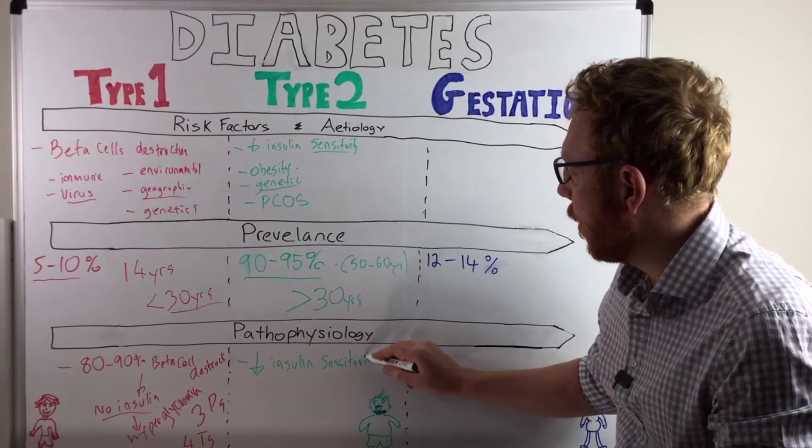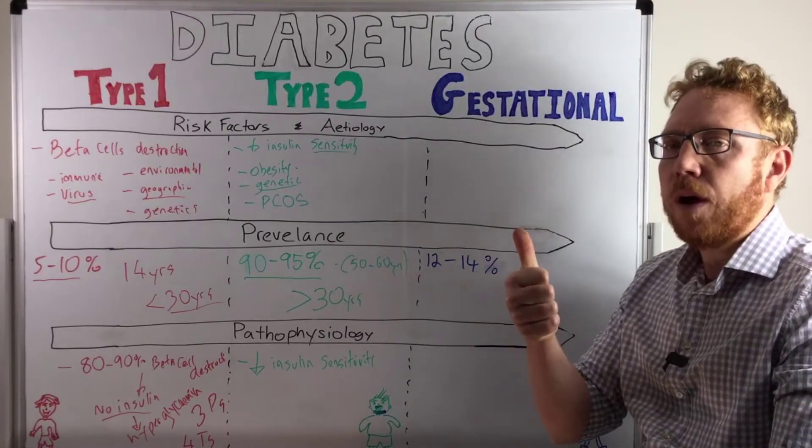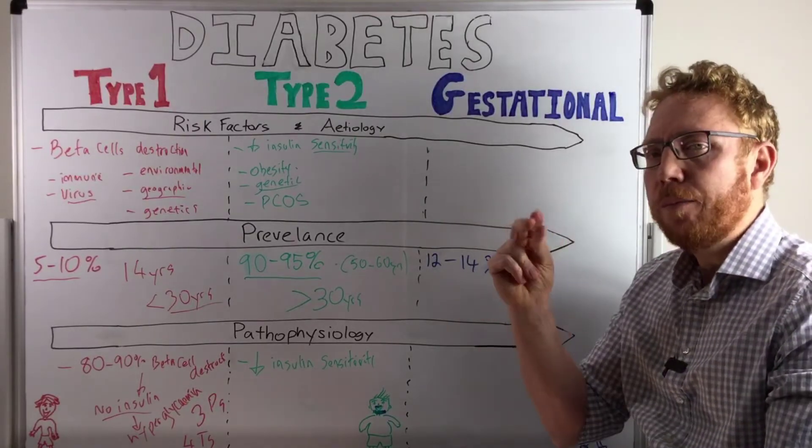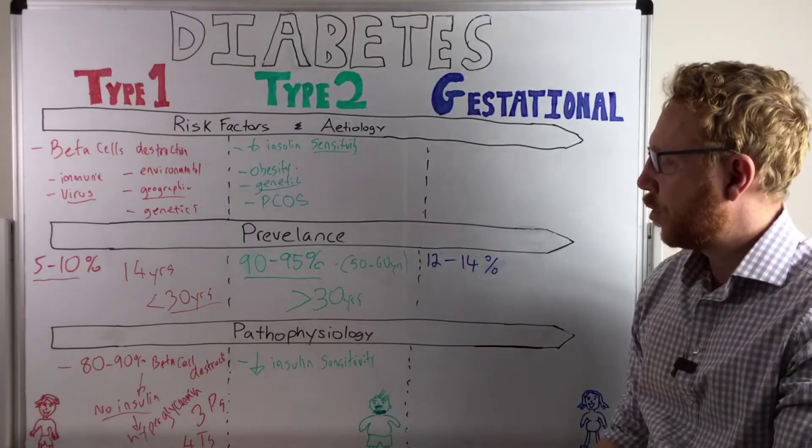And what tissues are most likely the candidates? Skeletal muscle is a big one. Also fat cells, so adipocytes, but also liver cells. So they're the three main cells or tissues that are going to lose the sensitivity to insulin.